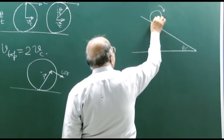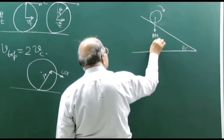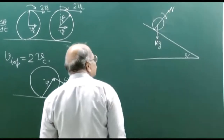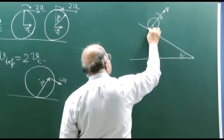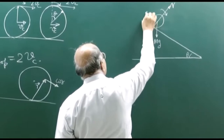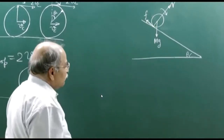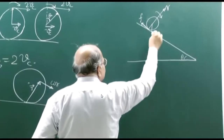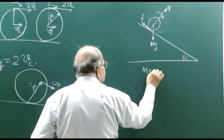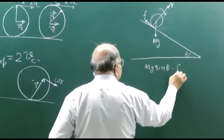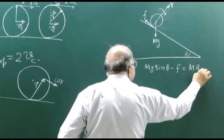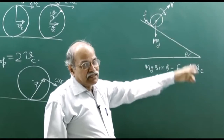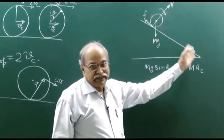Let us see what forces act on this ball. The forces are: weight mg, the normal force from the contact surface, and friction by the track — a frictional force f parallel to the surface. Writing the equation for translation along the direction of the track: the net resultant force is mg sinθ minus friction f, and that equals mass times acceleration of the center. This acceleration of the center will decide how much time it takes to travel down the incline, since distance equals half a×t².